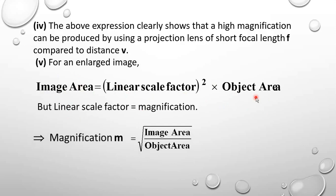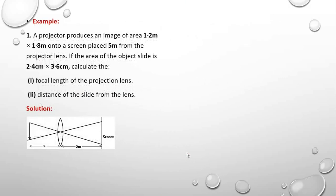So this is a very important expression: magnification is also given as the square root of image area over object area. Let's have this example. A projector produces an image of area 1.2 meters × 1.8 meters onto a screen.